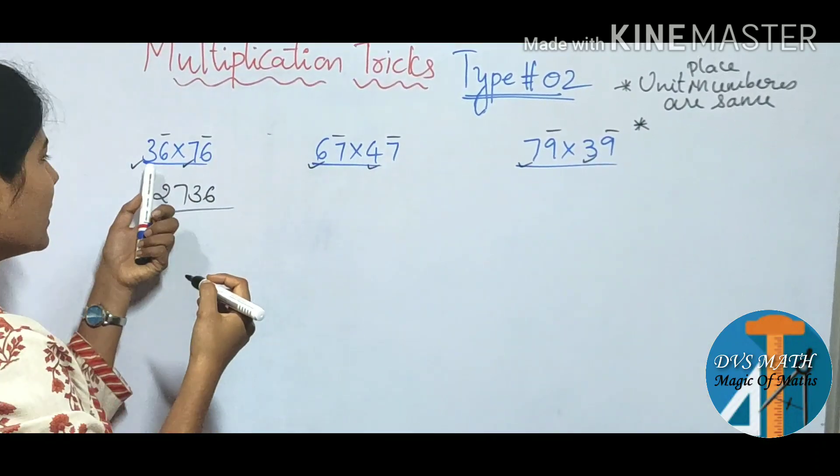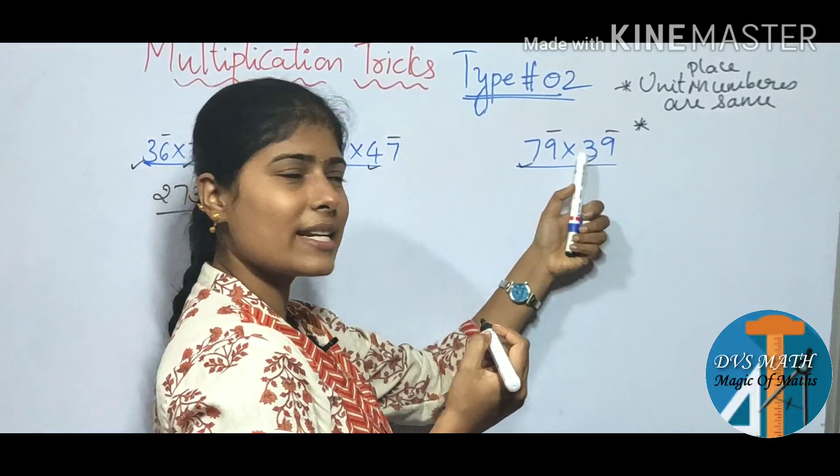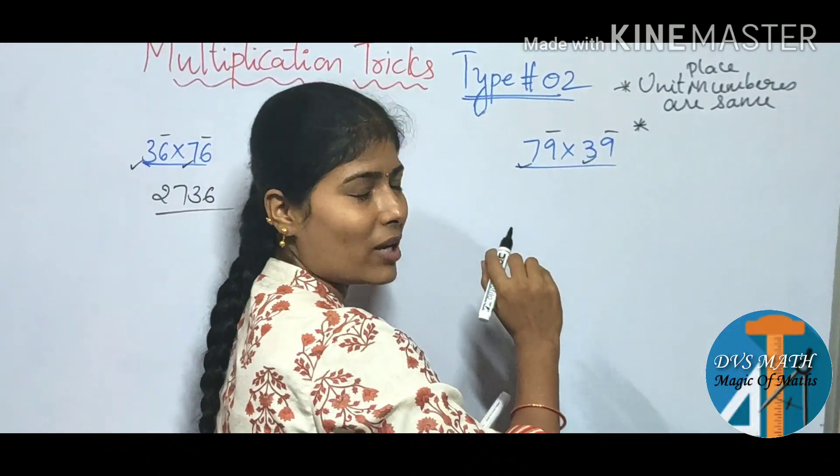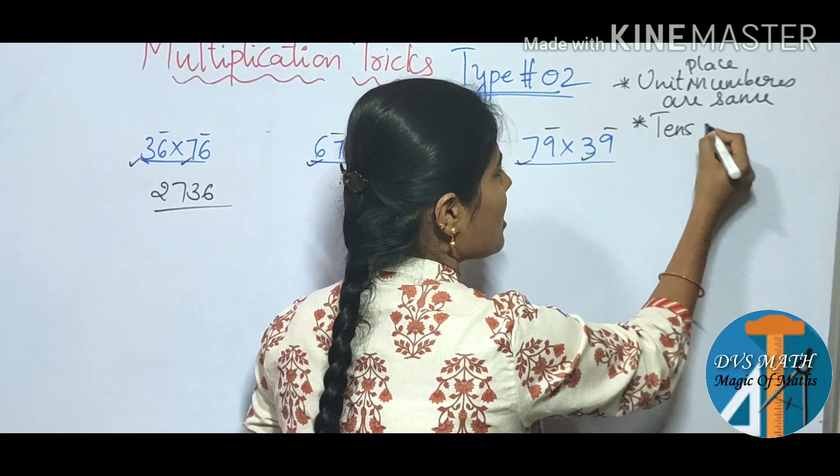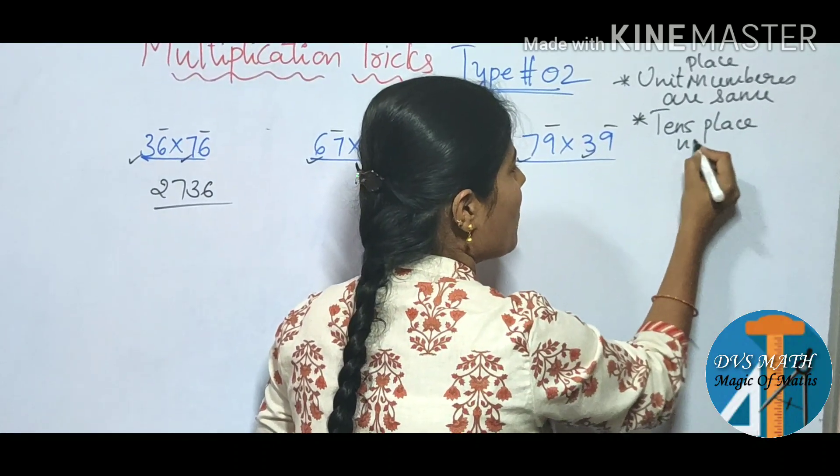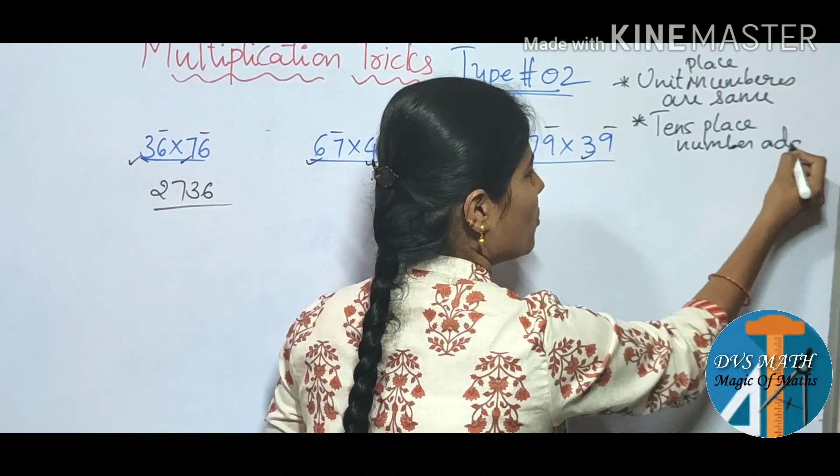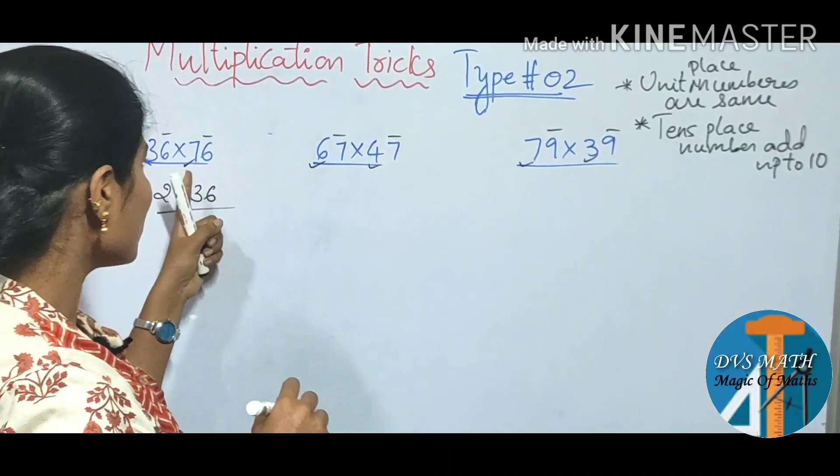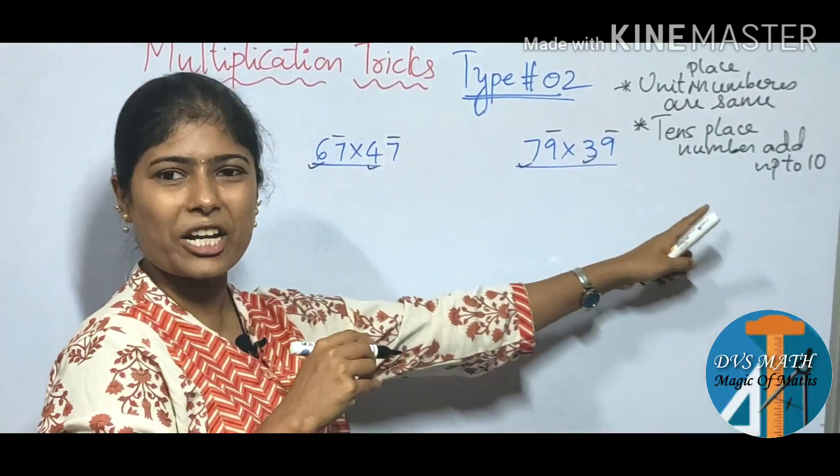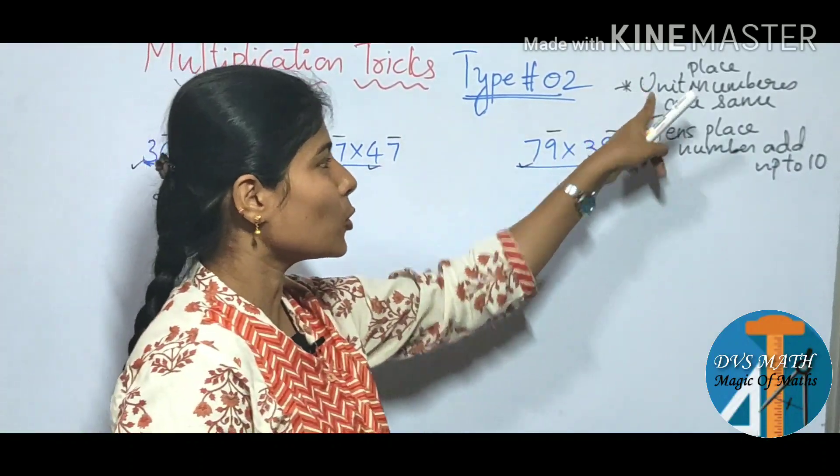Next, you know 3, 7, 3 plus 7, 10. 6 plus 4, 10. 7 plus 3, 10. And right, 10th place. So 10th place numbers add up to 10. 10th place, add to 10. Unit place same. Same as rule.